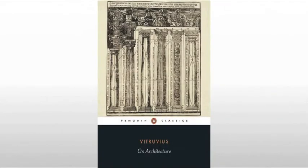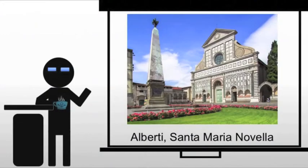Alberti believed in the absolute uselessness of the column, instead insisting on the use of a pier to create structural support. And we're going to see this, for example, at Santa Maria Novella, which this is now the third time that we've come across this church.